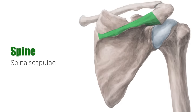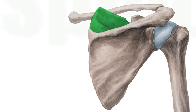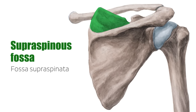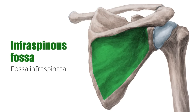On the posterior surface is the spine of the scapula, which lies between the next two structures. The supraspinous fossa, which extends from above the spinous process to the superior border of the scapula. And found inferiorly, the infraspinous fossa, which extends below the spinous process to the inferior angle of the scapula.